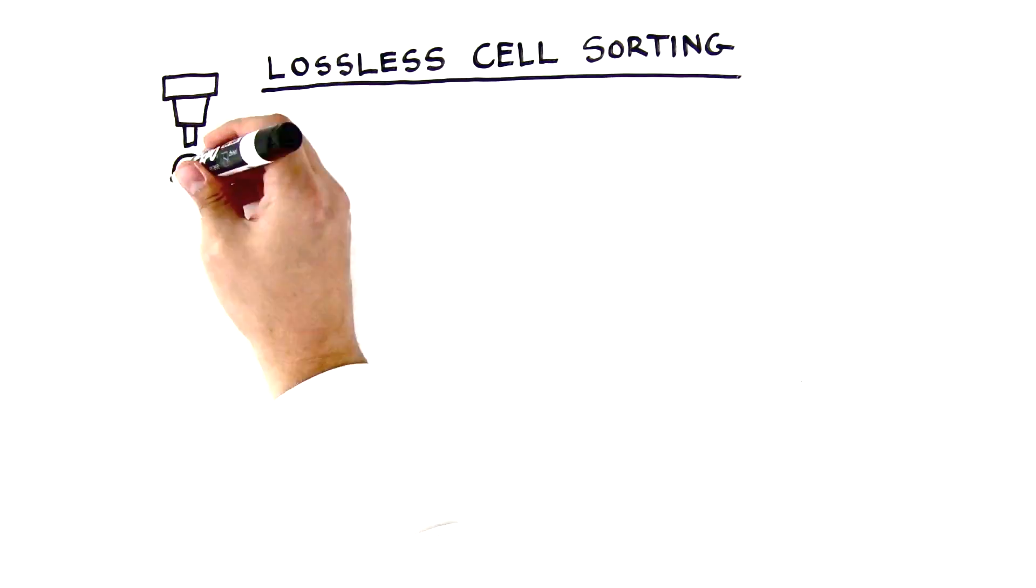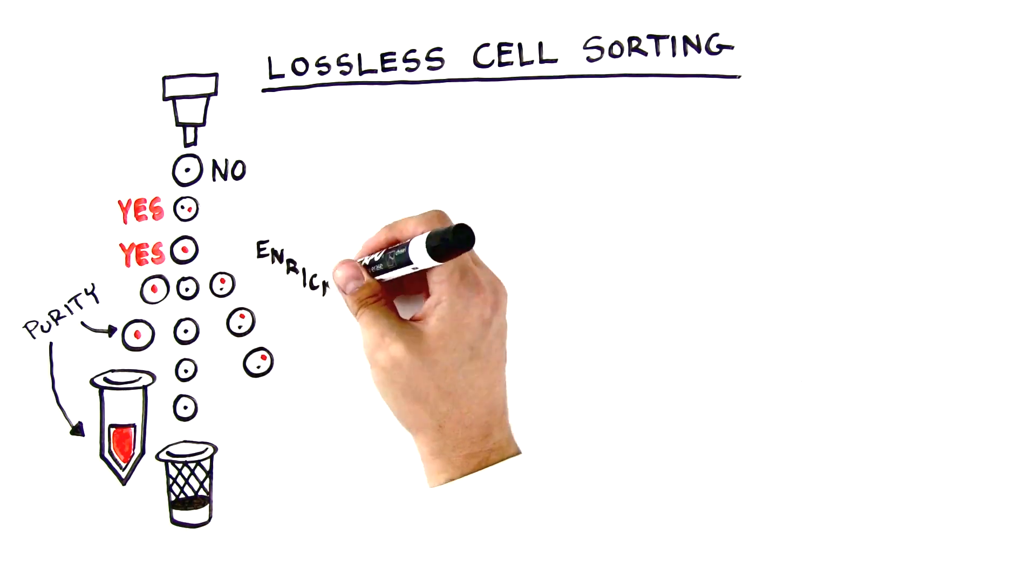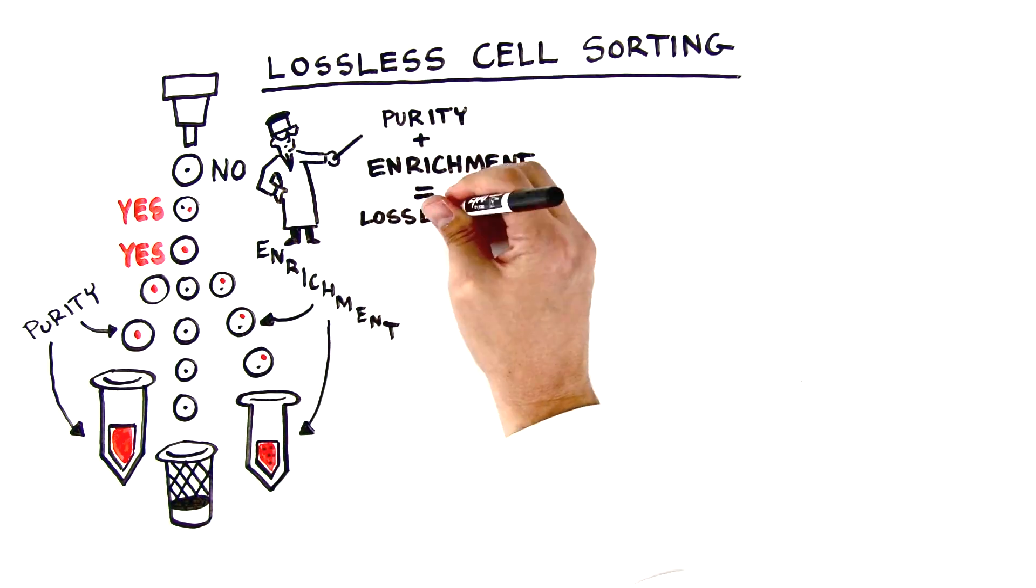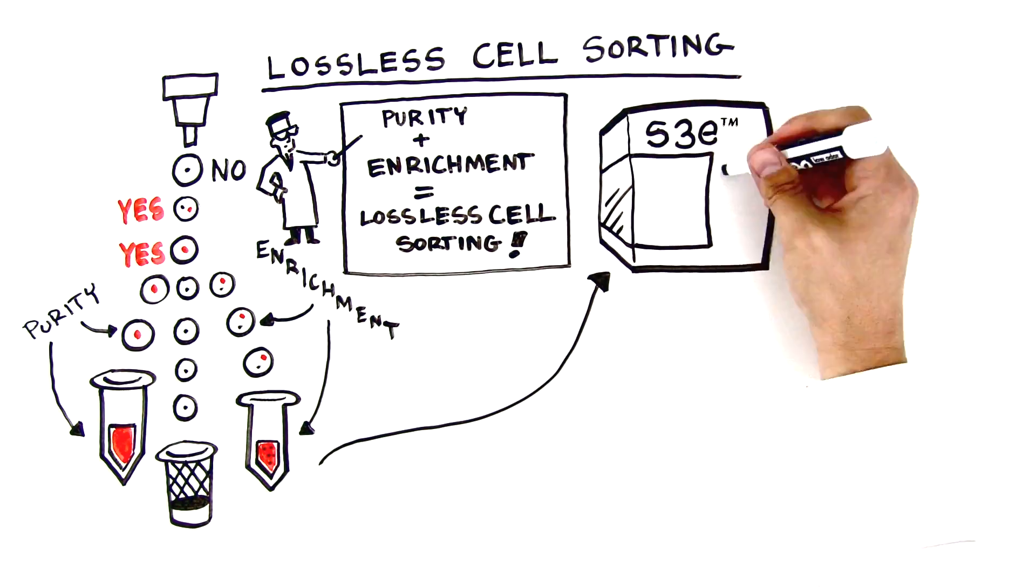But with BioRad's S3e cell sorter, you can sort in both modes at the same time. When using lossless cell sorting, the S3e won't jet target cells off to waste when nearby non-target cells muddy the stream.